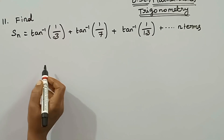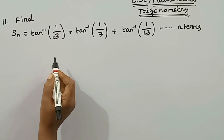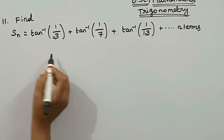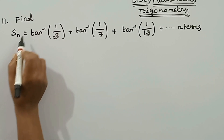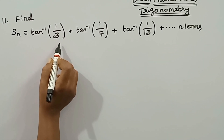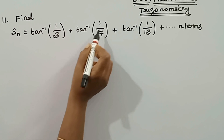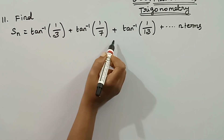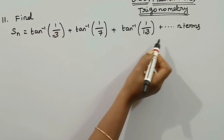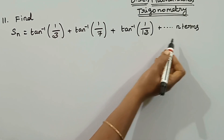Good morning students. We will discuss summation of trigonometric series in the next two problems. Find Sn equal to tan inverse of 1 by 3 plus tan inverse of 1 by 7 plus tan inverse of 1 by 13, and so on up to n terms.